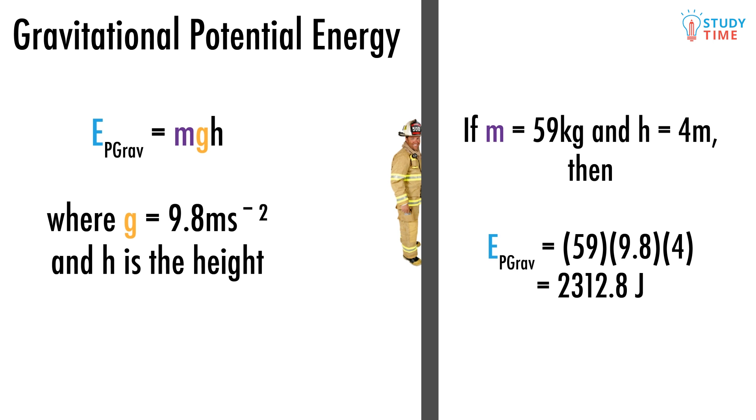All we do is stick the numbers into the equation. Ep grav equals 59 times 9.8 times 4, which is going to be 2312.8 joules.